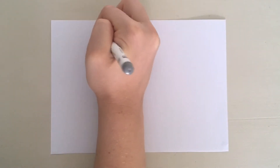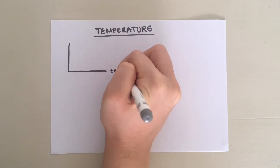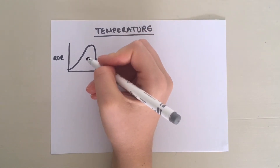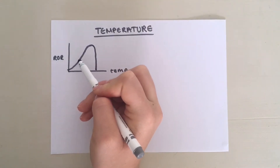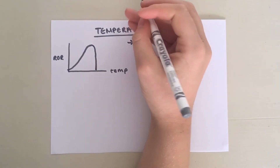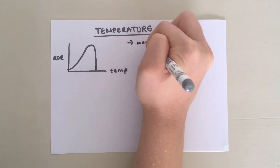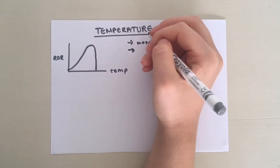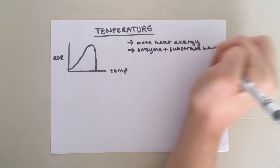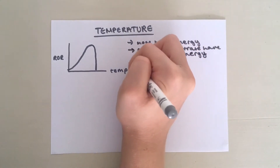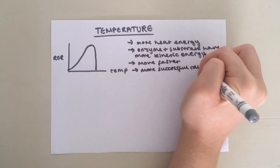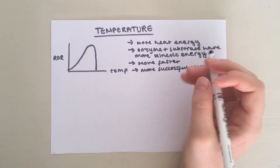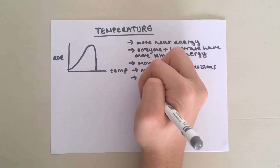Now we will take a look at some factors that affect the rate of enzyme-controlled reactions, starting with temperature. This graph shows temperature against rate of reaction. It shows that initially, as temperature increases, rate of reaction increases. This is because an increase in temperature provides more heat energy, giving both enzyme and substrate more kinetic energy. Therefore they move faster, resulting in more successful collisions between enzyme active sites and substrate molecules, so more enzyme-substrate complexes are formed per unit time.